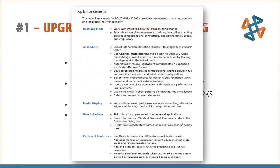You also want to check out the What's New Guide because there are new features that may apply to your specific workflow. A lot of people don't realize there's a new feature in, say, sheet metal, even though they use sheet metal every day. Here are some top enhancements of 2021: detailing mode for drawings, assembly updates for changing mate alignments on edits, user interface changes, and edge flanges on nonplanar tangent edges in sheet metal. These don't apply to everyone, but if you use them, they could be a game changer.